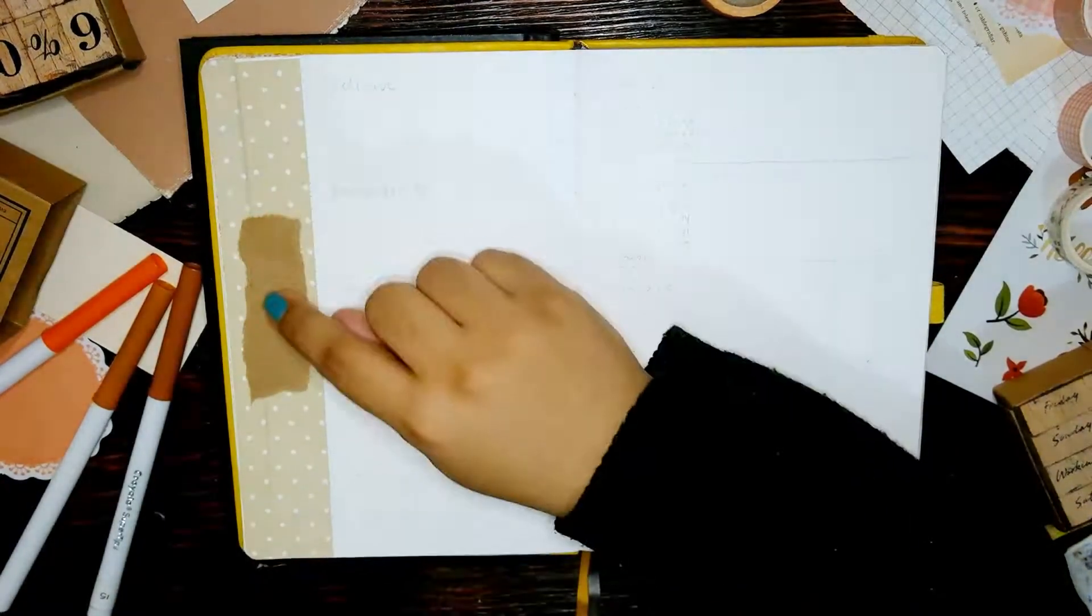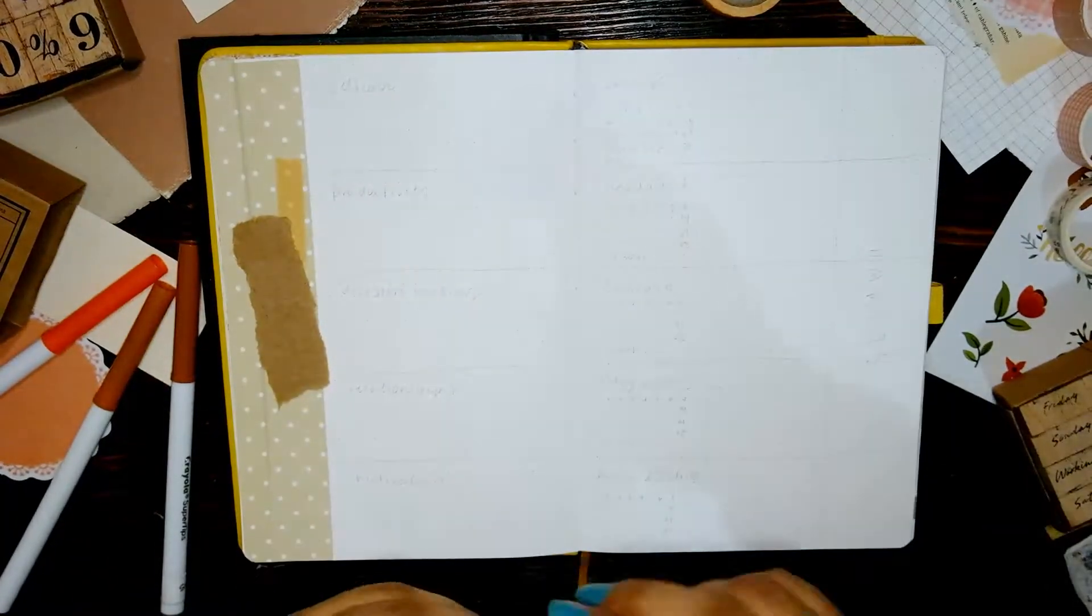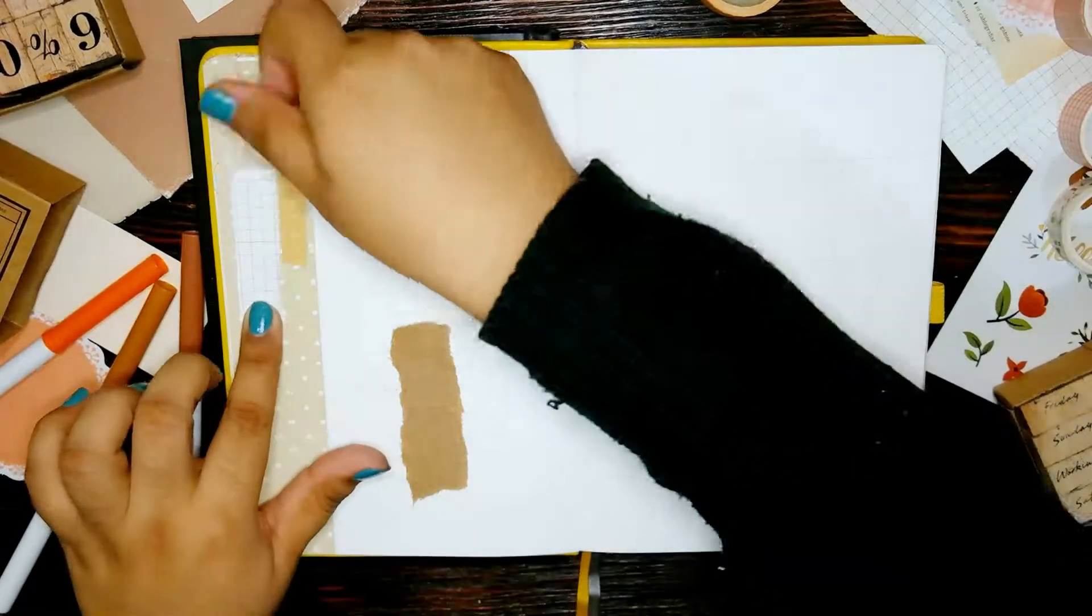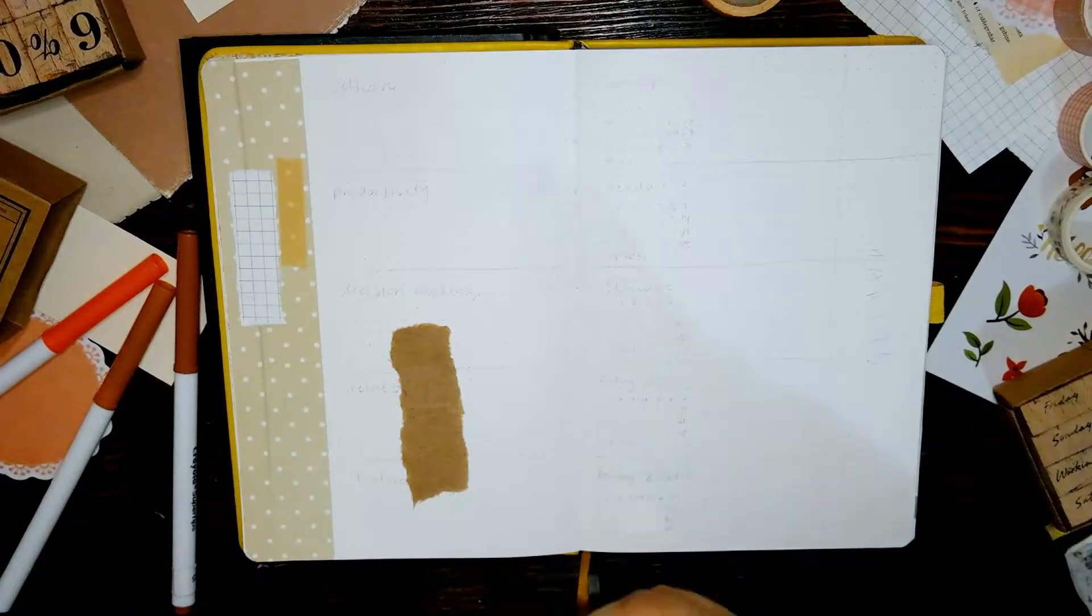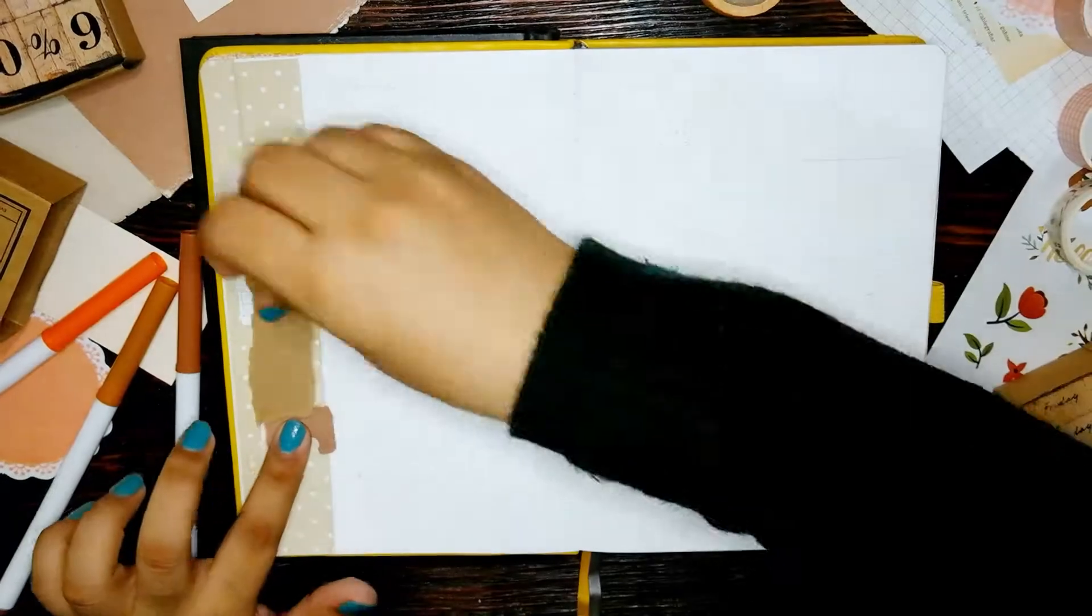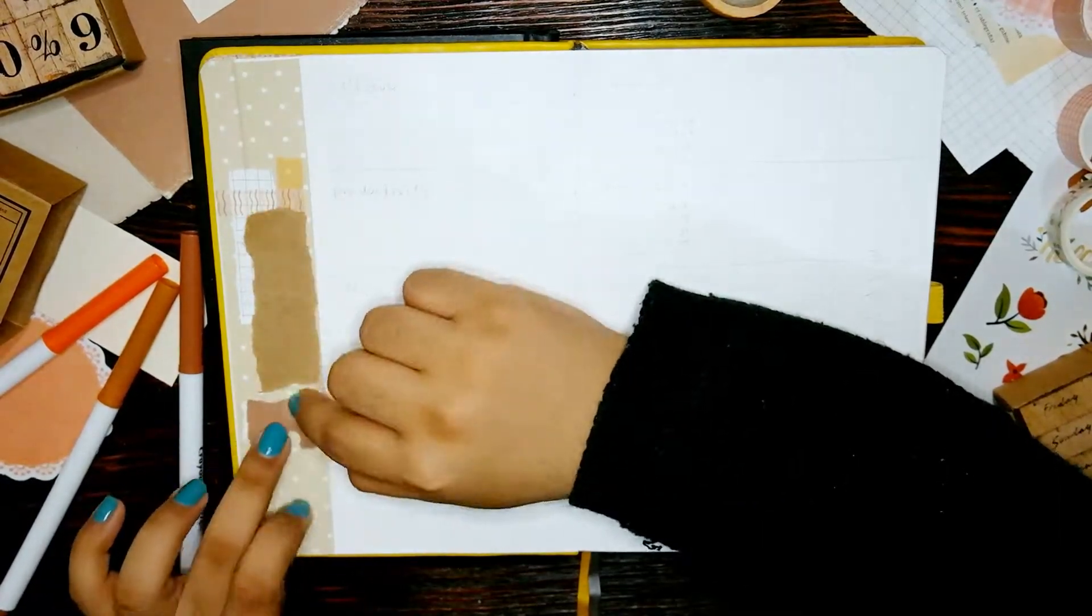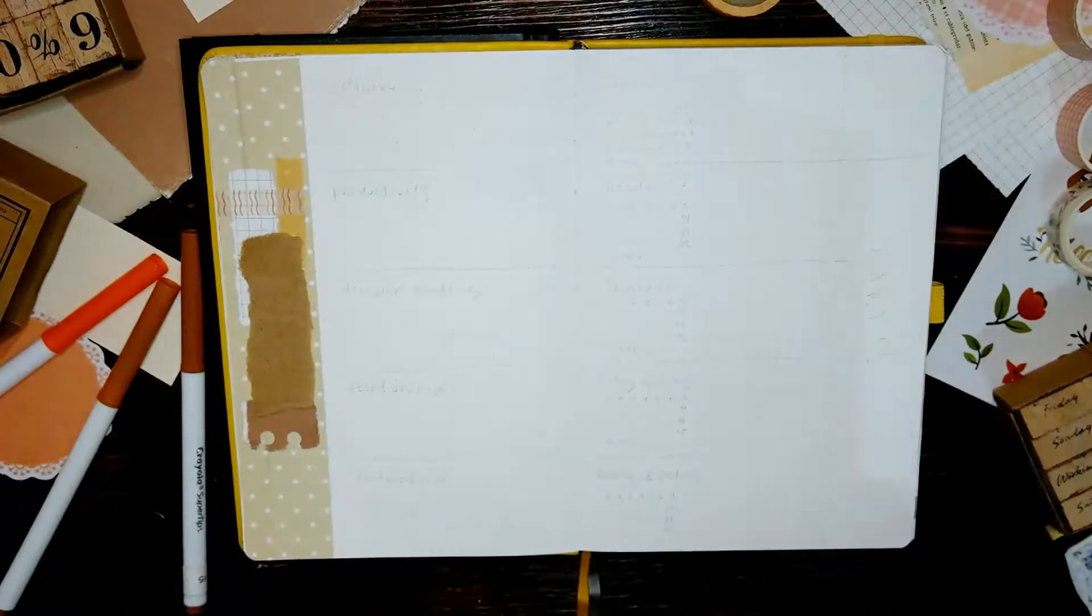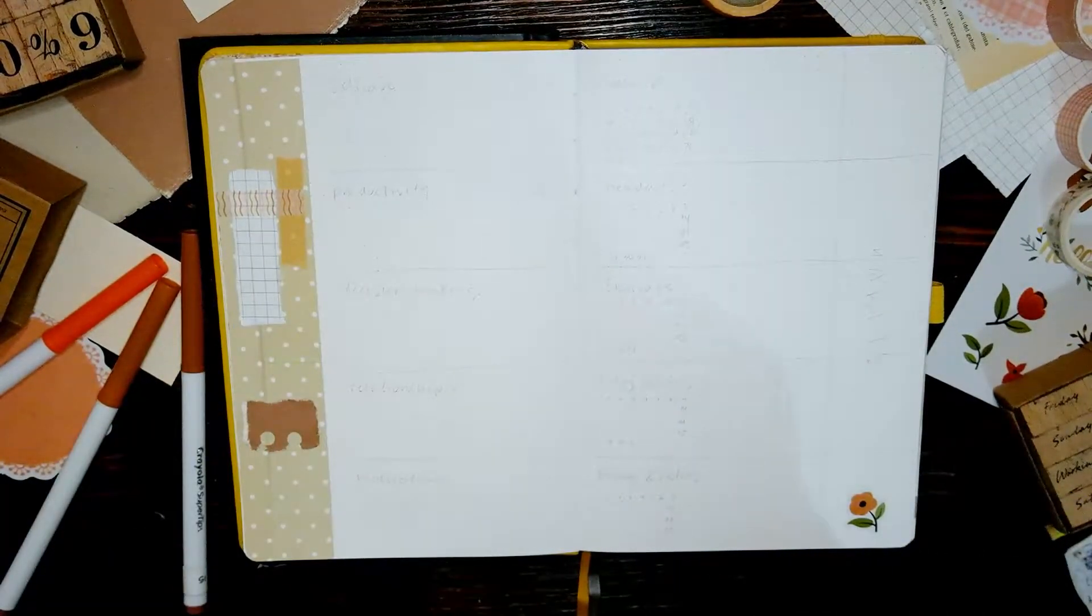It did work quite well and I do have another complementary spread to set up later in the video. Two spreads actually, you'll see them in a bit. Basically this page is going to be divided into five different sections, each of them will be a different category where I'll write down the main priorities within those areas I want to focus on.